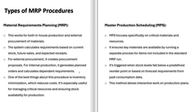Let's dive into the three main types of MRP procedures. Each one has a unique approach depending on the type of material and business need. First, we have Material Requirements Planning, MRP. This method is used for both in-house production and external procurement of materials. The system checks available stock and future demand — if materials are needed, MRP generates either a procurement proposal for externally purchased goods or a planned production order for in-house manufacturing. This process helps minimize inventory while ensuring production runs smoothly.